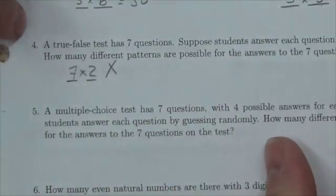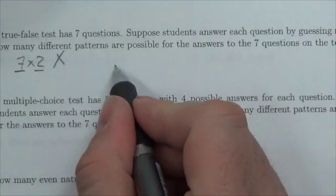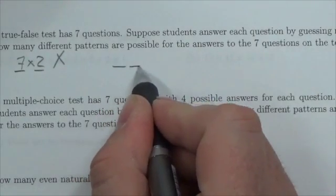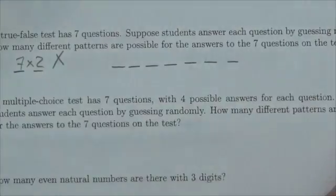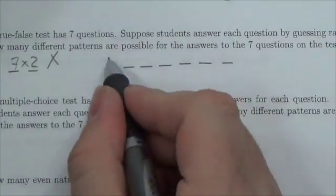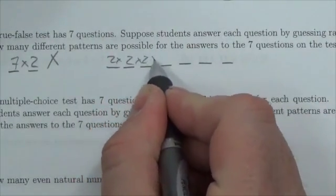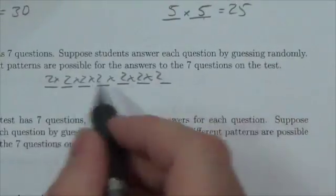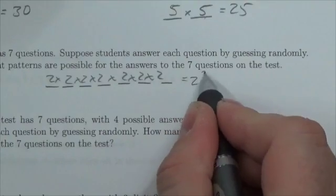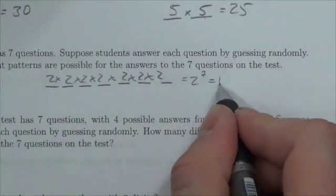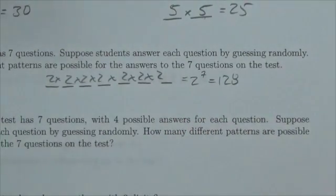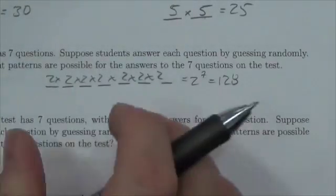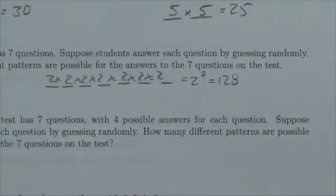The expectation is that you're answering every question, and there are seven questions, so there are seven subtasks to complete to finish this test. There are two options for every question, and so the number of different ways this could happen would be two to the power of seven, or 128 different patterns of true and false that could be given for this exam.